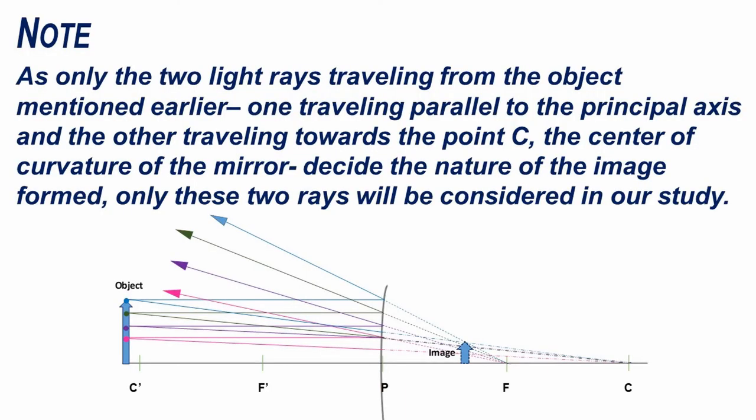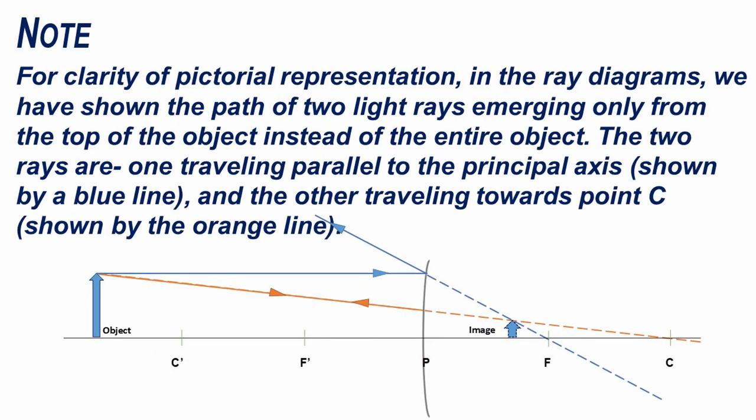Only the two light rays travelling from the object — one travelling parallel to the principal axis and the other travelling towards point C, the centre of curvature of the mirror — decide the nature of the image formed, so only these two rays will be considered. For clarity of pictorial representation in the ray diagrams, we have shown the path of the two light rays emerging only from the top of the object. The ray parallel to the principal axis is shown by a blue line, and the ray travelling towards point C is shown by an orange line.